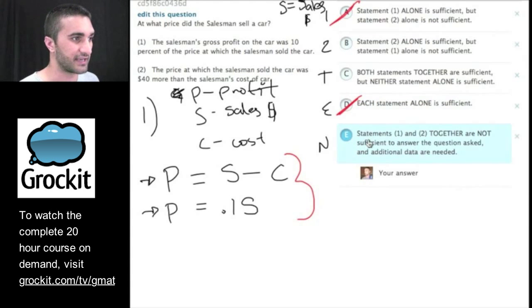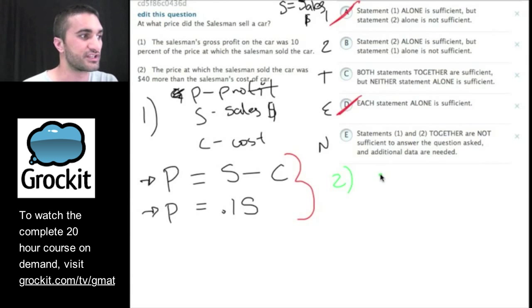Let's work the second statement, number two. The price at which the salesman sold the car was $40 more than the salesman's cost of the car. So the price, which they said was S, was $40 more than the cost. If we say the cost plus $40, then we have the sale price of it. They're asking us at what price did the salesman sell a car? If all we know is this, we have two unknowns and one equation. I don't think that's enough for us to figure out what the sales price is. So we can get rid of two as well.